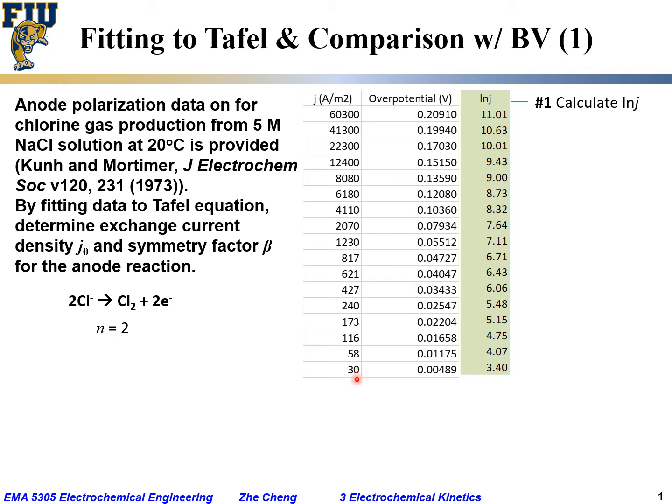For example, if the current density is 30, the natural log would be 3.4. So the first step is to calculate natural log of the current density. Of course, you can calculate the log with base of 10, but here, just for this example, I used natural log.